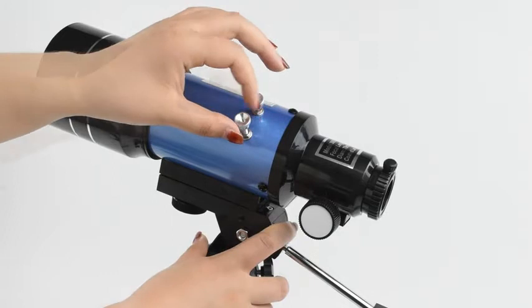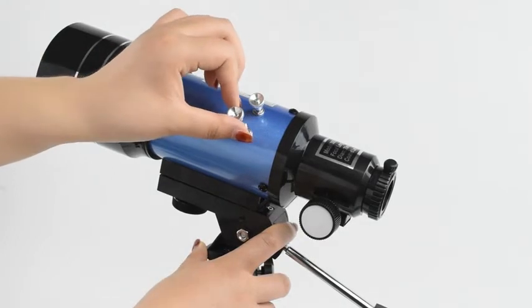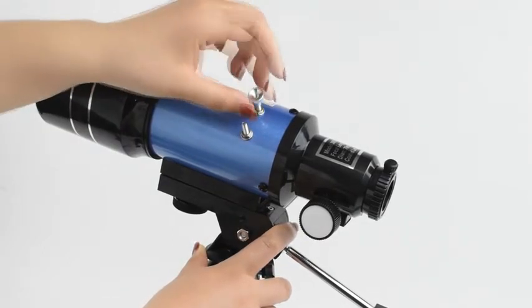Remove the thumb screws from the telescope main tube. Place the finder scope bracket onto the telescope tube and fix it with the screw.